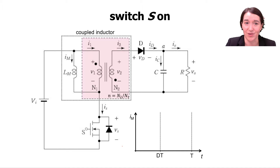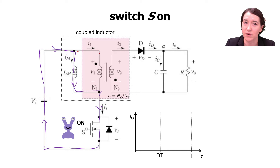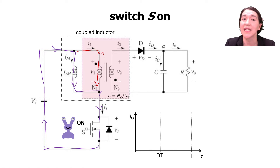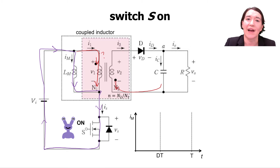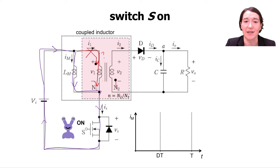When switch S is on, current flows from the source through the magnetizing inductance and through switch S. You might wonder about current through the coupled inductor — if current flows into the dot on one side, it has to come out the dot on the other side, but we have a diode blocking both of those paths, so current cannot flow through the ideal transformer portion.